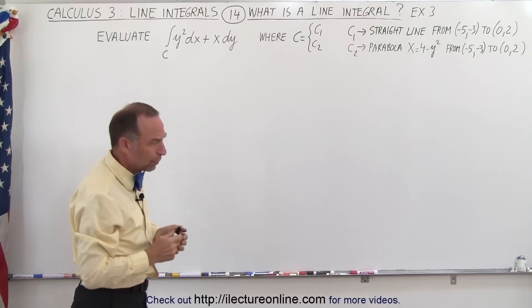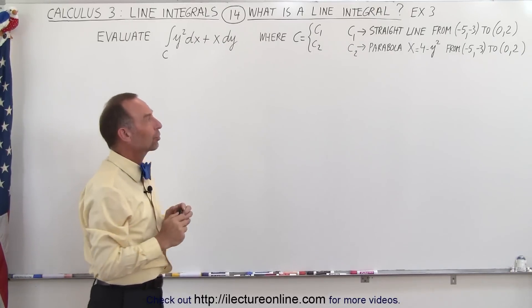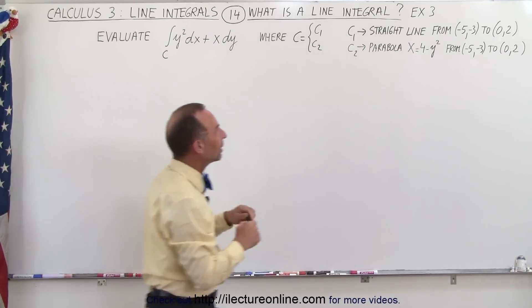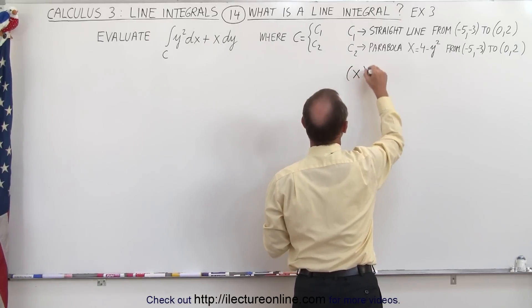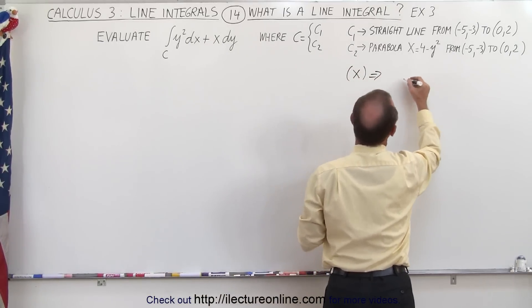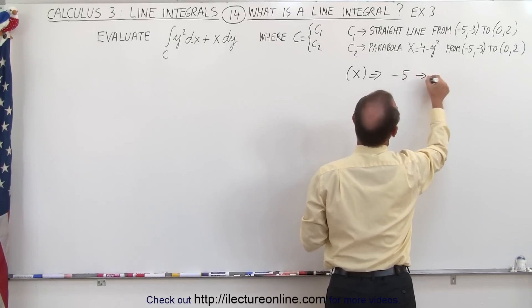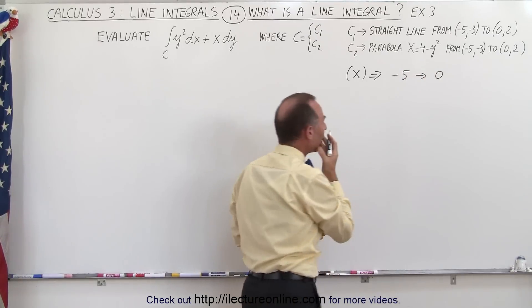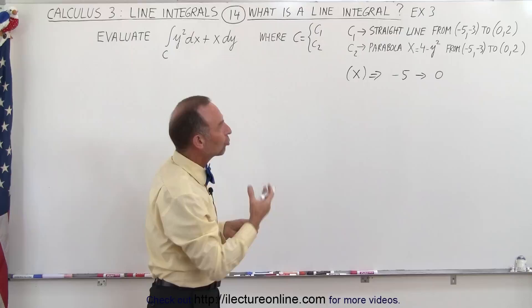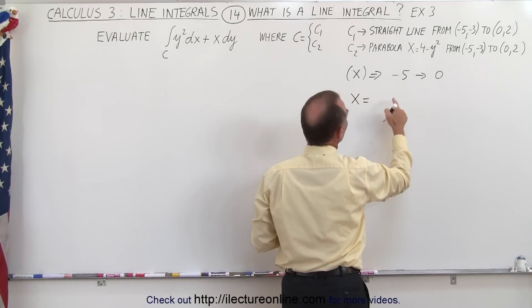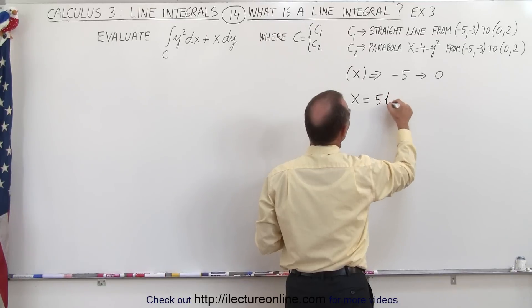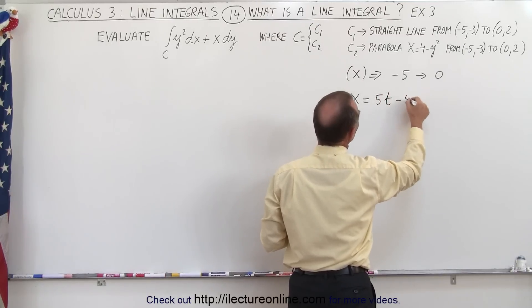So how do we do that? Well, we're going to come up with some parametric equations. So if we realize that for x, when we take a look at the x variable, we can see that we go from a minus 5 to a 0. So how can we come up with an equation to describe that? Well, we can say that x is equal to 5 times t minus 5.